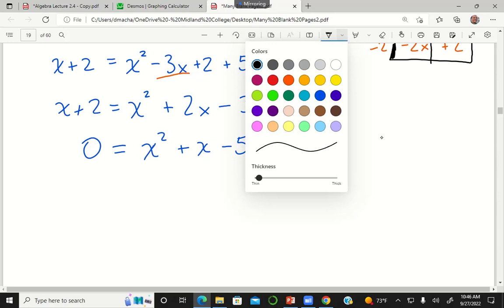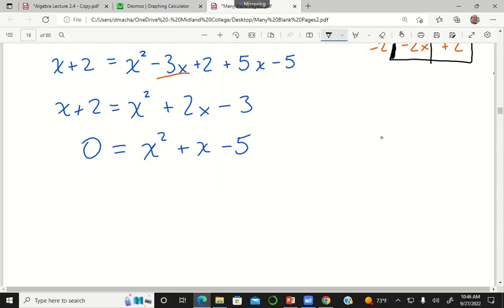If you tried to factor, that's not going to work, because the only factor pair of 5 is 1 times 5. And there's no way to add or subtract 1 and 5 to give you 1. So factoring doesn't work, but the quadratic formula is always going to work. So we have to keep this quadratic formula memorized and ready to go.